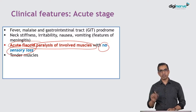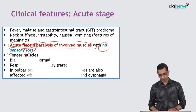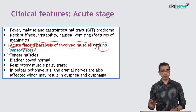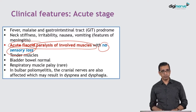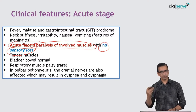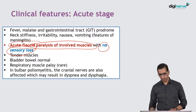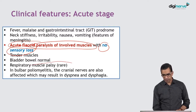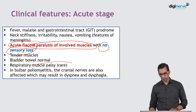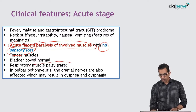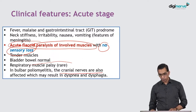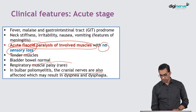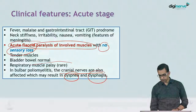When you touch these muscles, they are tender. Bladder and bowel are usually involved. If there is a bulbar form, there may be respiratory muscle paralysis. If the cranial nerves are involved in bulbar poliomyelitis, it may result in dyspnea and dysphagia.